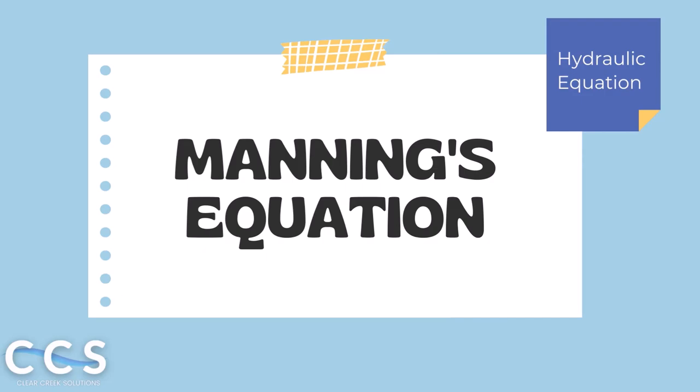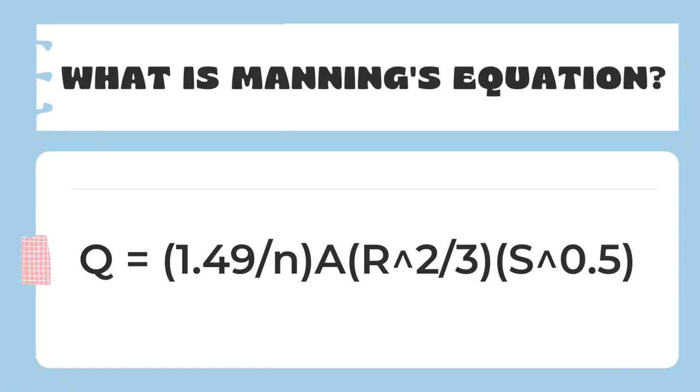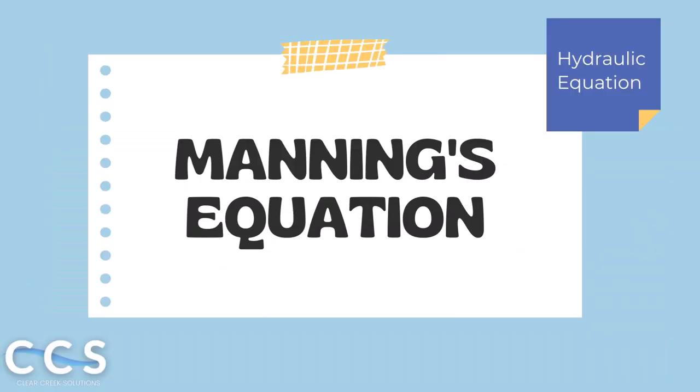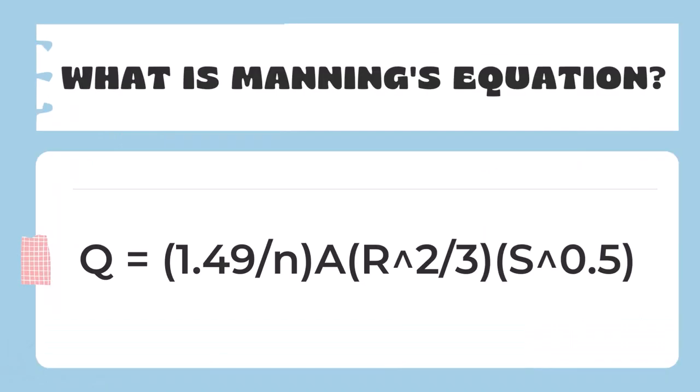So what exactly is Manning's equation? Well written out it's Q equals 1.49 divided by n times A times R raised to the two thirds power times S raised to the 0.5 power or the square root of S.